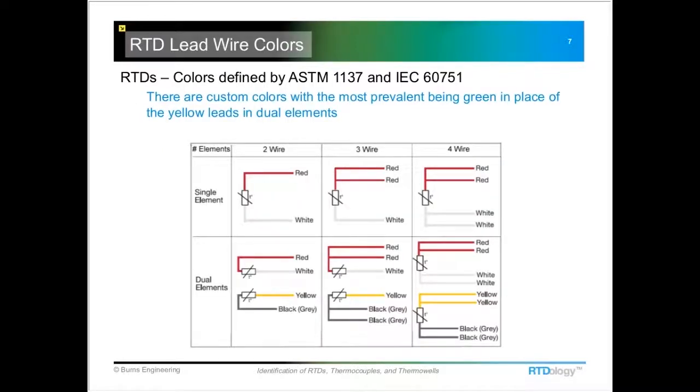Now there are some differences in the color coding based on manufacturers. The standards define the colors as this, but there are at least two or three manufacturers that substitute green for the yellow leads, especially on the dual elements. So that's where you're going to see kind of the biggest difference. These will just be green. For several of the big instrument houses, we'll use a different color code there.